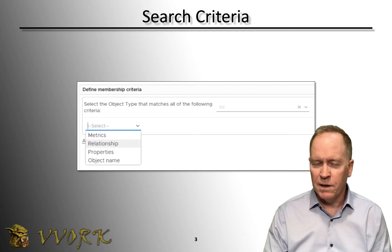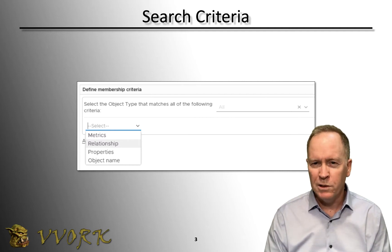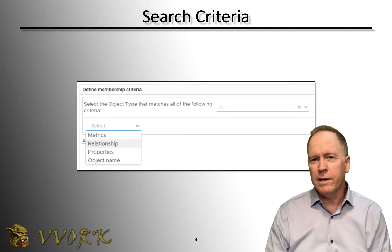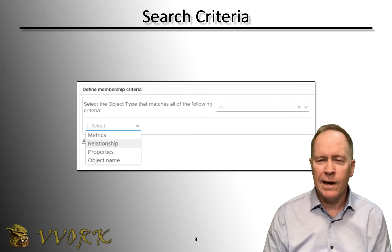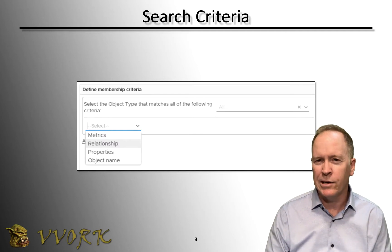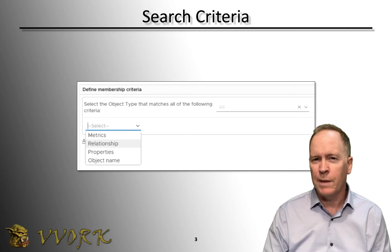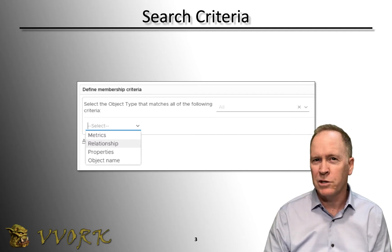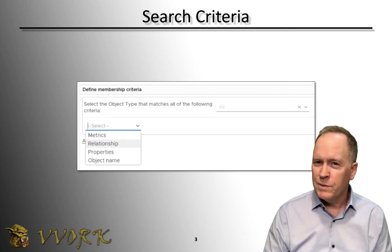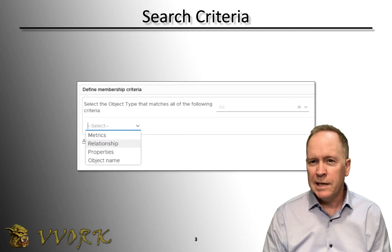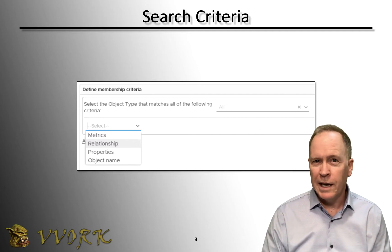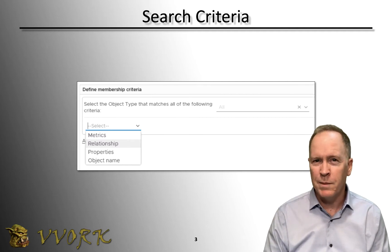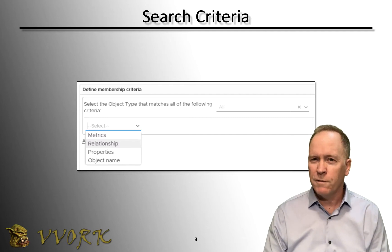I'm going to give you a much more complete demonstration in a few moments, but before the demonstration, one of the things I want to emphasize is that when you create a custom object group, you're going to set up criteria that specifies which objects belong to the group. One of the key things you'll specify is whether you're choosing metrics, relationship, properties, or object name. We are going to tackle the relationship option in this first video. In the next sequence of videos, we'll talk about metrics, properties, and object names. But for now, let's focus on relationships.